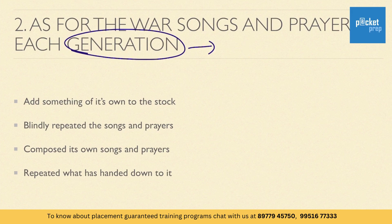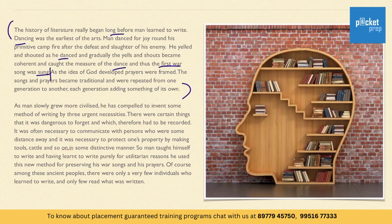Skimming the passage, the word 'generation' can be seen, which is our keyword in the question. The line reads: the songs and prayers became traditional and were repeated from one generation to another.